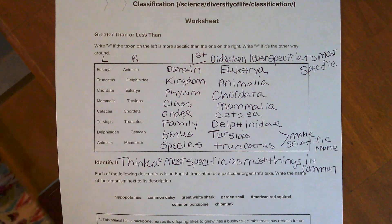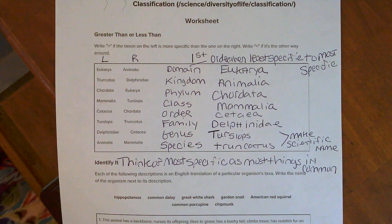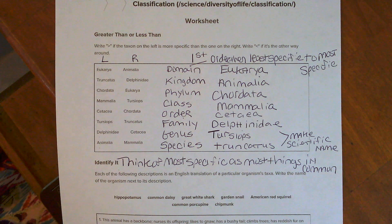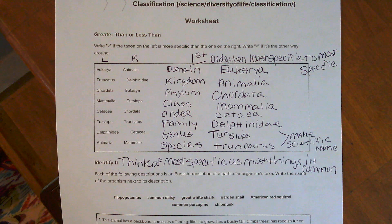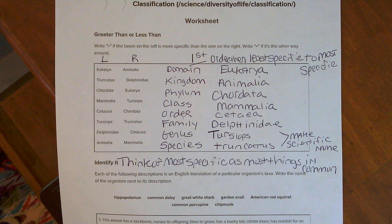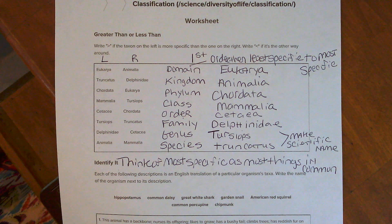First, let's put the eight words we use in taxonomy, or taxa, in order from least specific to most specific. Most specific means those organisms share a lot of things in common with the other organisms there. Nothing is more specific than species — they share everything in common, they can breed together, and their offspring can go on and breed. Goats breed with goats, horses with horses, and so on.